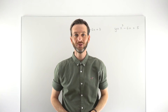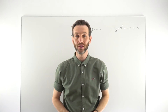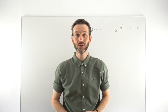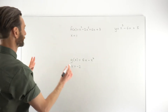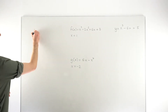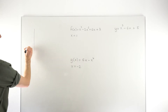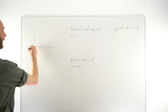In this class, we're going to take a look at how you determine whether a function is increasing or decreasing. In the previous class, we were looking at a scenario where we had a curve, and we wanted to consider the tangent line to the curve.